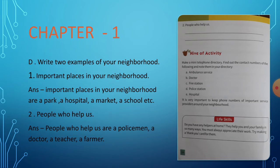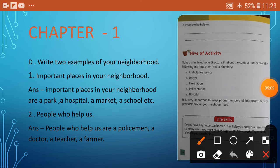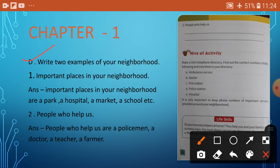Question D, number 1: Important places in your neighborhood. See Question D on the left side. Answer: Important places in your neighborhood are a park, a hospital, a market, a school, a railway station, etc.